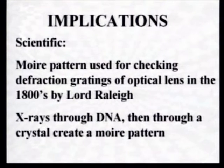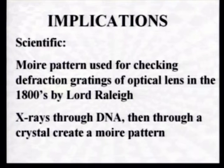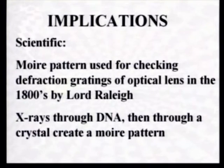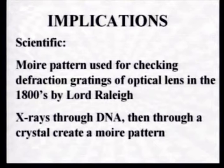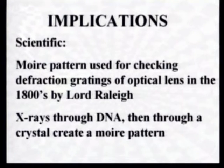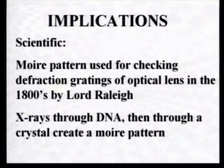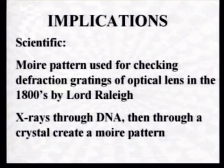The moire pattern was used in science in the 1800s to check diffraction gratings by Lord Rayleigh — that was the first recorded usage. More recently, scientists found that if you pass X-rays through DNA and then through a graphite crystal, what you see on the other end is a diffraction pattern. A diffraction pattern is made from the interference of light and dark — that's a moire pattern in my opinion, though scientists call it a diffraction pattern.